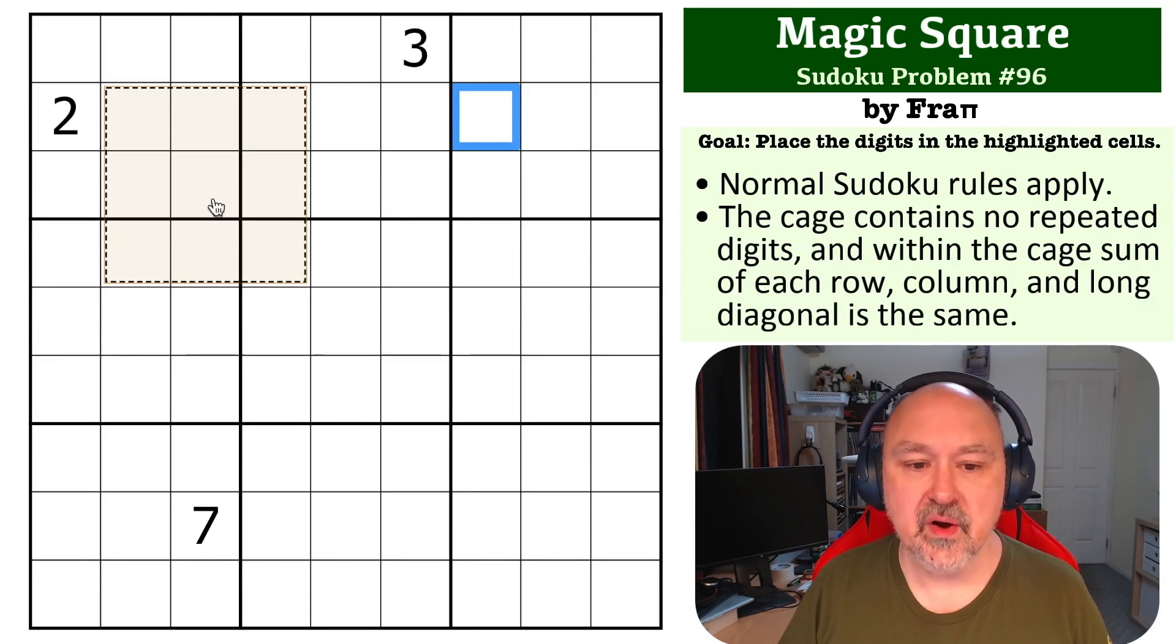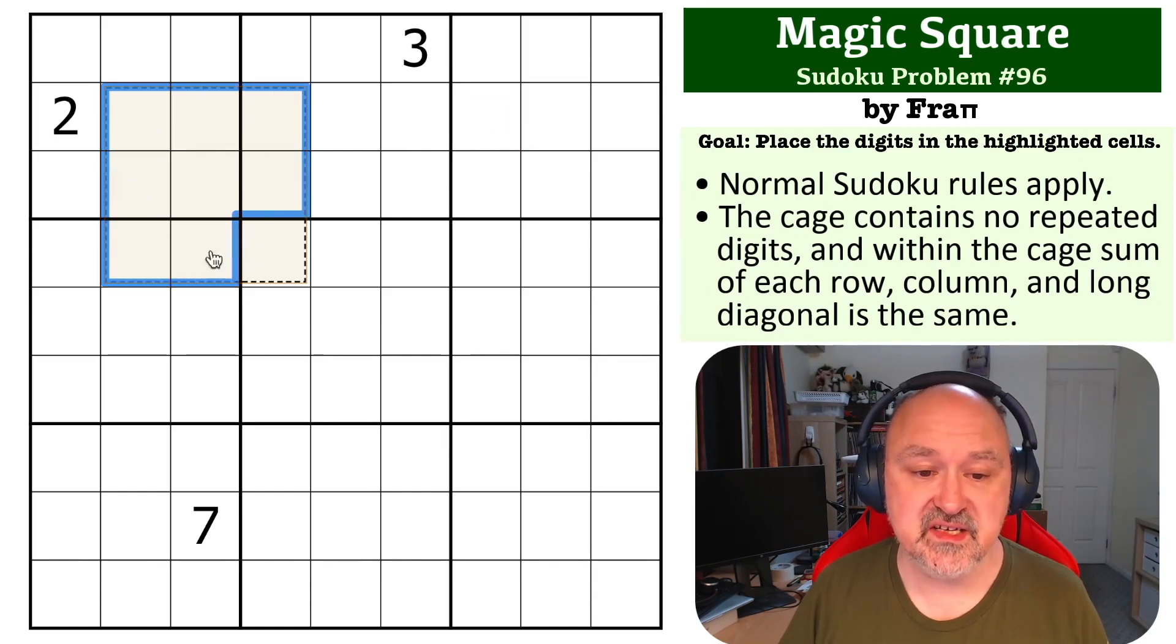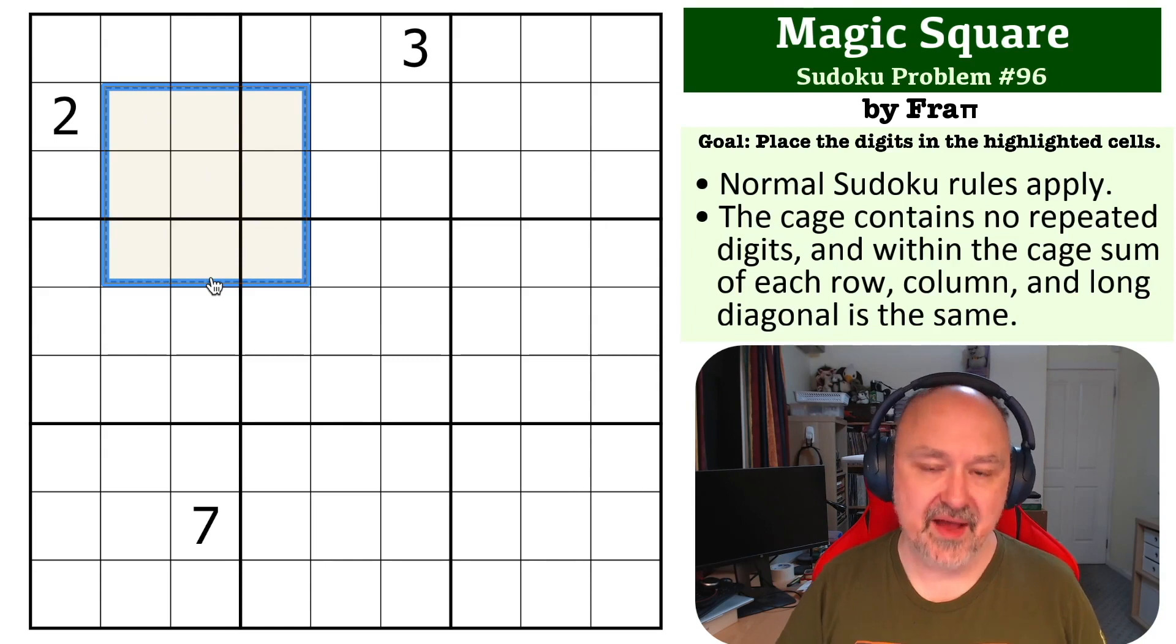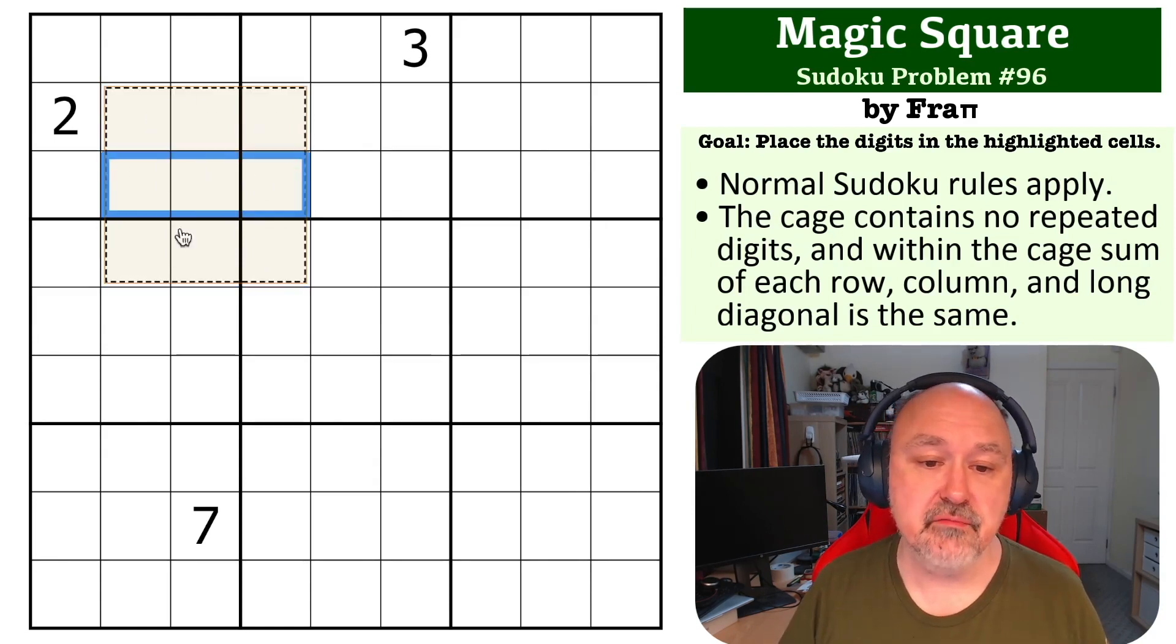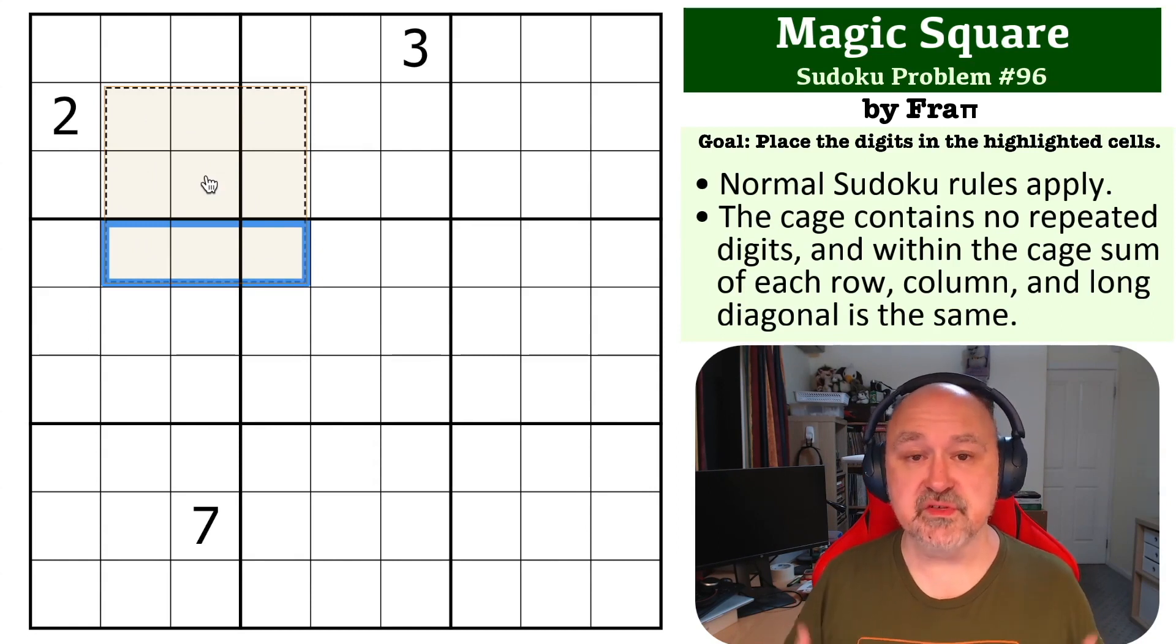So one of the things is, what are the sums going to be? Now, all of these will contain different digits. If these contain all of the digits one to nine, and you add them all, you get 45. But there are three rows, so each of those three rows must have the same total. So 45 divided by three is 15. We know that the rows are going to sum to 15.